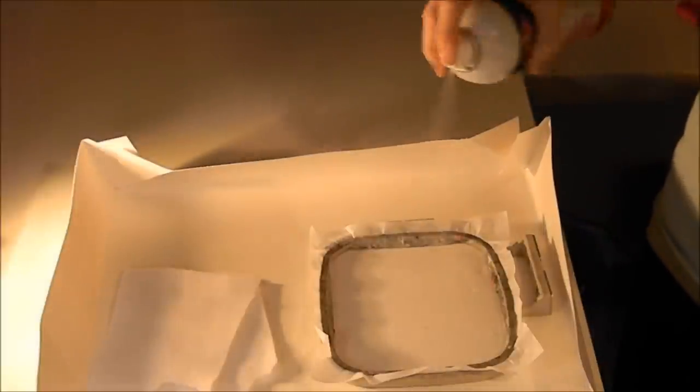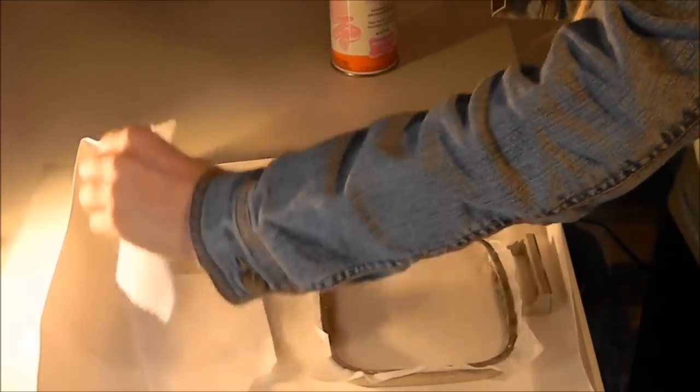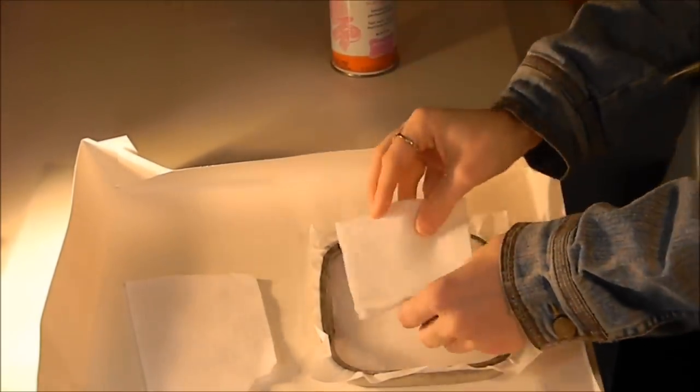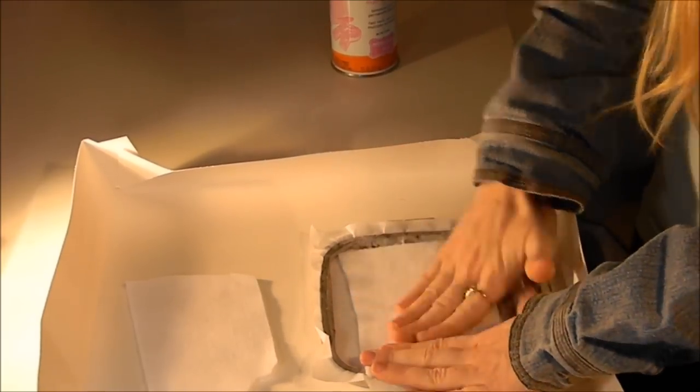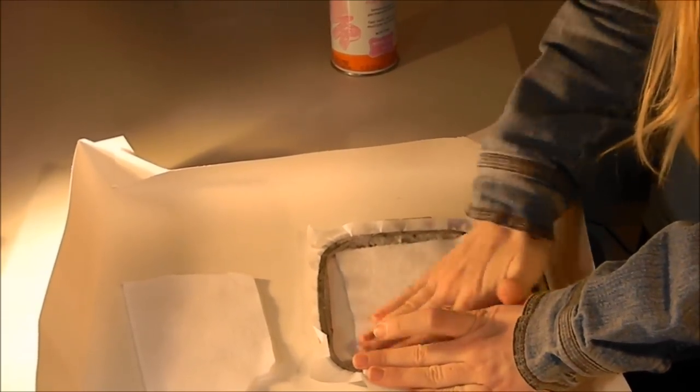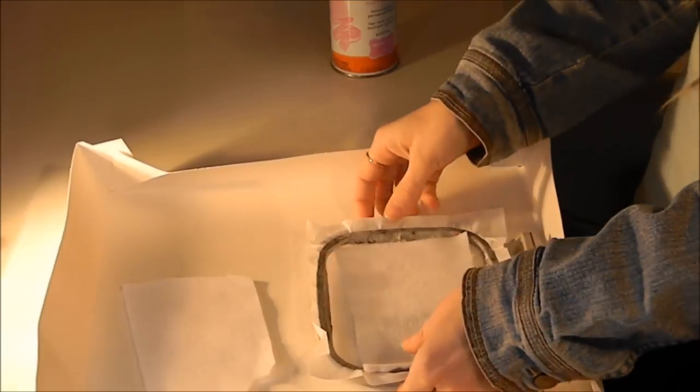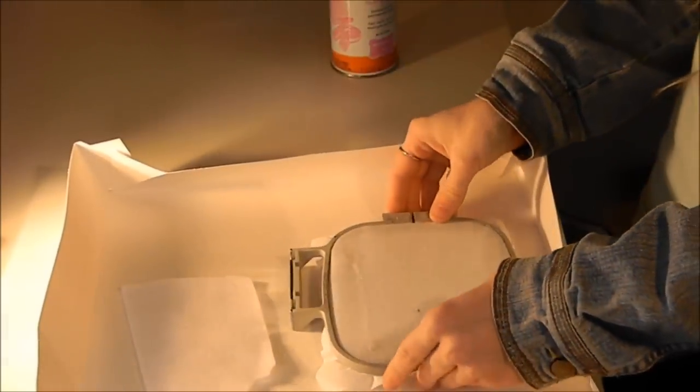I give my tear away stabilizer a little spray. I lay down the fleece square right in the center of my hoop, give it a little rub, make sure it's nice and secure on there, flip it over.